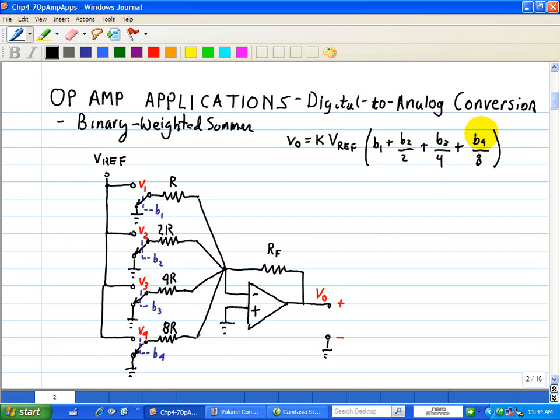So to implement this, we have an op-amp configuration shown here, configured as an inverting summer. So note we have weighting resistors R, 2R, 4R, and 8R.